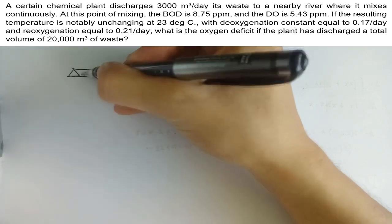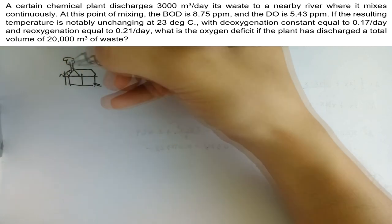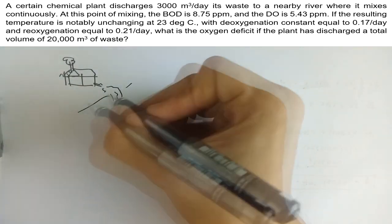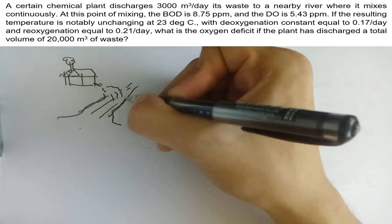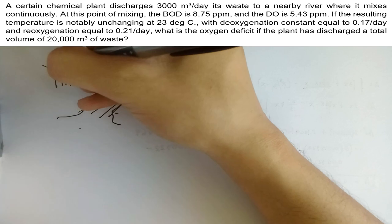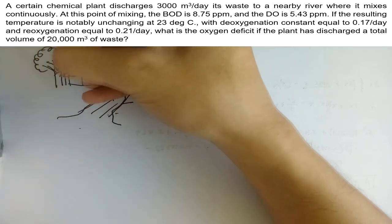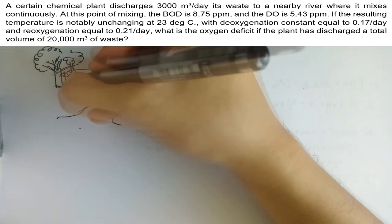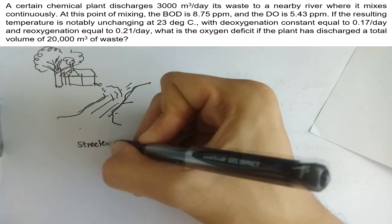Now, let's try a little more complicated problem. What could happen when a certain plant discharges wastewater to its nearby river? A certain chemical plant discharges 3,000 cubic meters per day of its waste to a nearby river where it mixes continuously. At this point of mixing, the BOD is 8.75 parts per million and the dissolved oxygen is 5.43 ppm. If the resulting temperature is notably unchanging at 23 degrees Celsius, with deoxygenation constant equal to 0.17 per day and reoxygenation constant equal to 0.21 per day, what is the oxygen deficit if the plant has discharged a total volume of 20,000 cubic meters of waste?